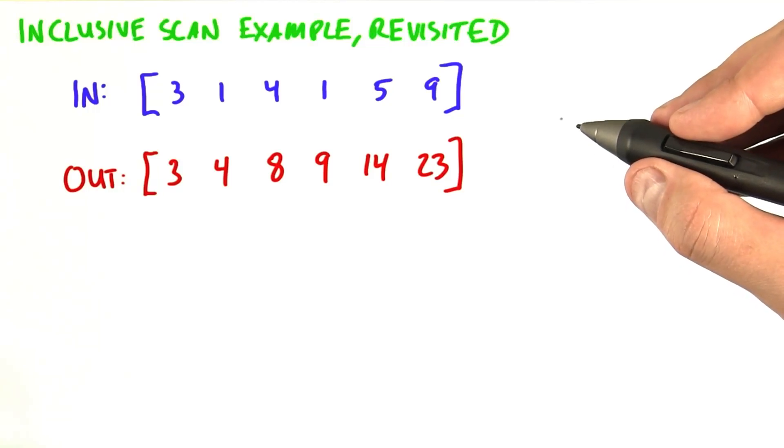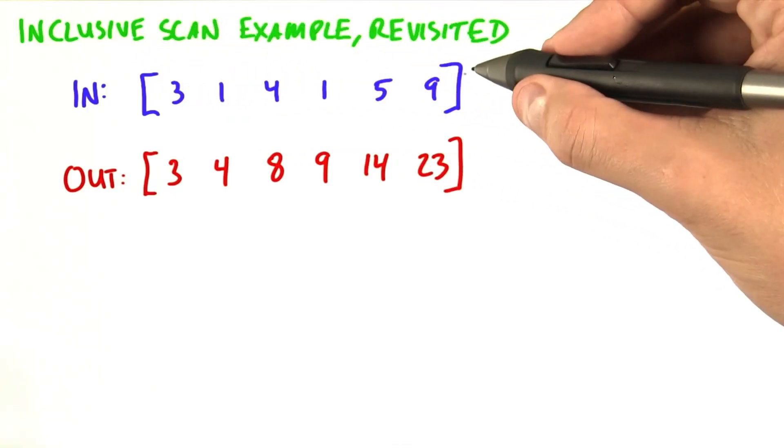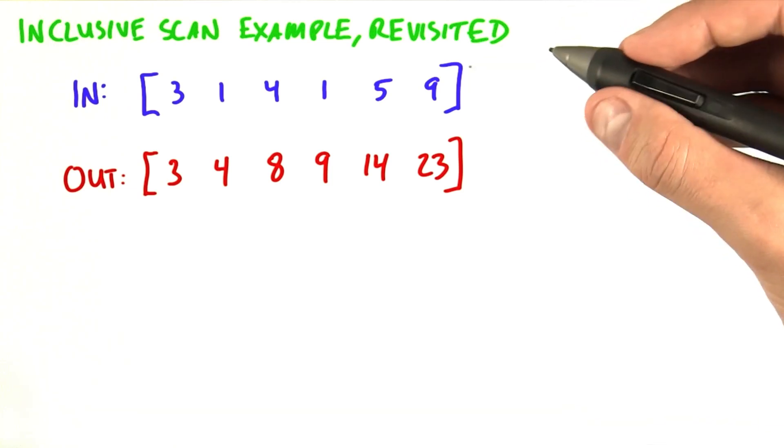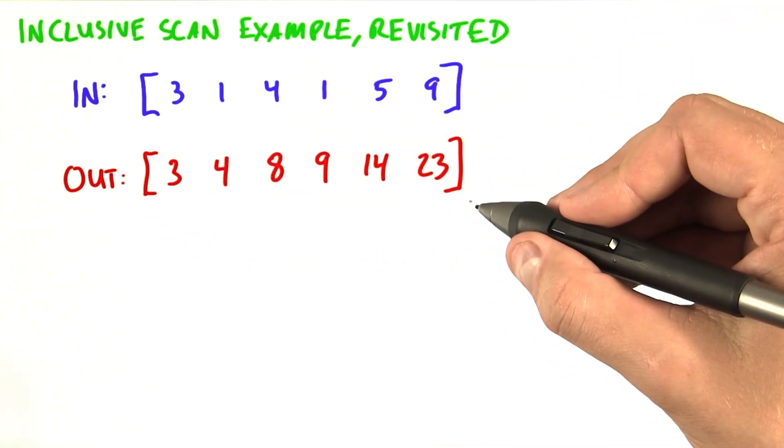So let's revisit this inclusive scan example. We have, again, a six-element input sequence, and we're going to reduce it with the plus operator to generate this output sequence.